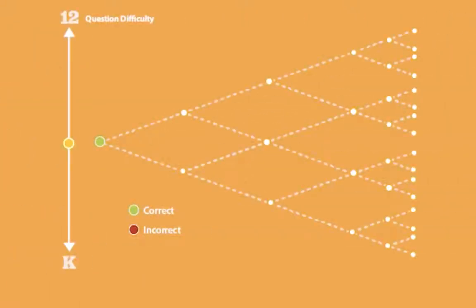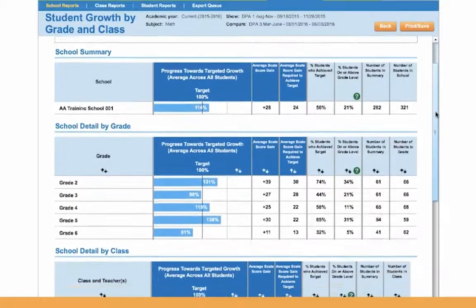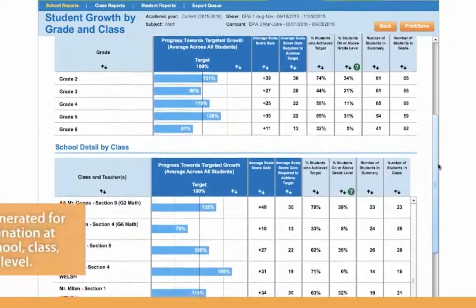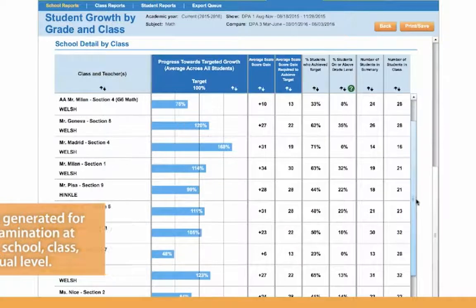The iReady Diagnostic is intelligent. It adjusts based on student response patterns and derives large amounts of information using a limited number of test items. Every student is unique, therefore every student's actual performance level will vary. Upon completion of the Diagnostic, reports are generated instantaneously at the district, school, class, and individual level.